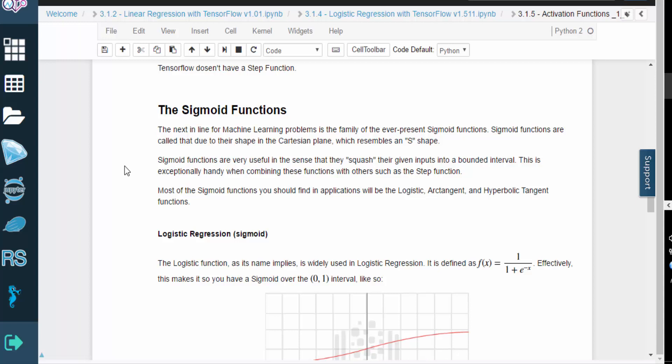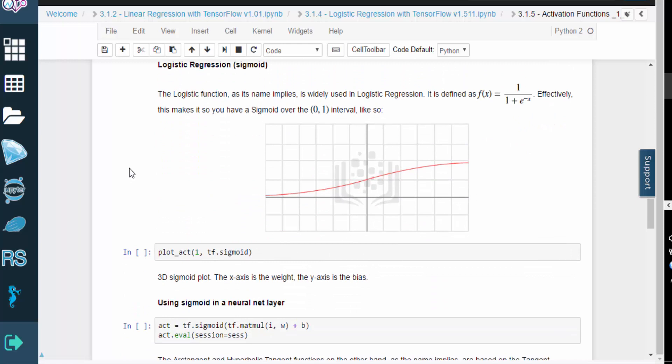Sigmoid functions are an extremely popular function family in the machine learning world. The term comes from the S shape that the plots form on the Cartesian plane. Sigmoid functions are useful because they compress the input down into a bounded interval. This helps when you need to combine the result with other functions, like the step function from before. The most commonly used sigmoid functions are the logistic, arctangent, and hyperbolic tangent functions.